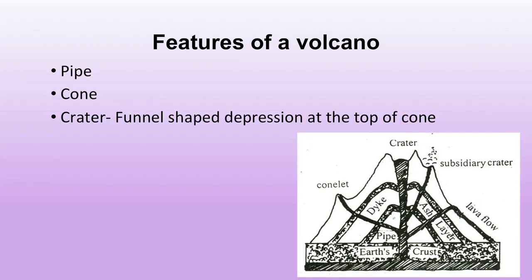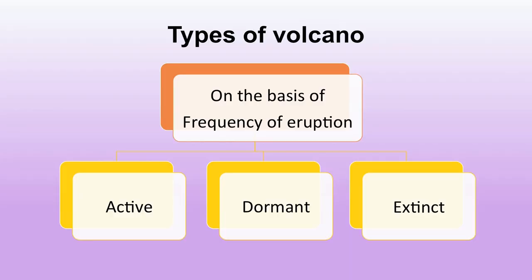A volcano has three basic features: a pipe through which magma comes out, a cone formed when magma, hot gases and ash accumulate outside, and a crater — a funnel-shaped depression at the top of the cone. On the basis of frequency of eruption, volcanoes are of three types: active, dormant, and extinct. Active volcanoes are those that erupt frequently, have erupted recently, or are currently in action.